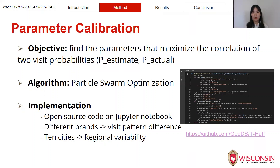The objective of the calibration is to find parameters that maximize the correlation between the two visiting probabilities: P-estimate from our model and P-actual, the actual visiting probability calculated from our ground truth SafeGraph data. The algorithm we use for optimization is particle swarm optimization. All source code and some data are available on our GitHub repository. We did the same parameter calibration process for different brands to identify visiting pattern differences, and for 10 cities to discover any regional variability.